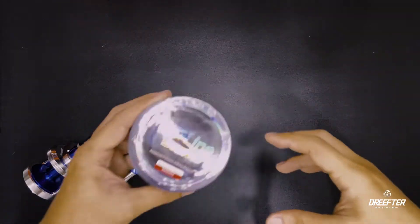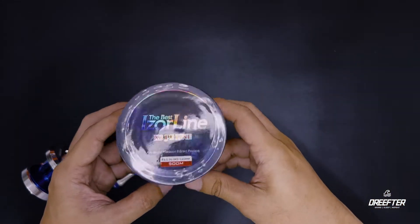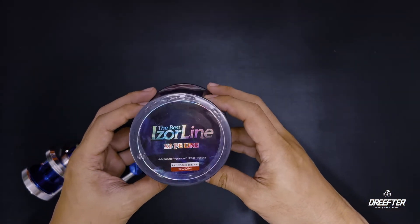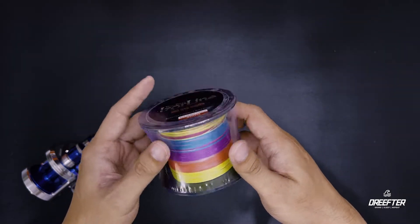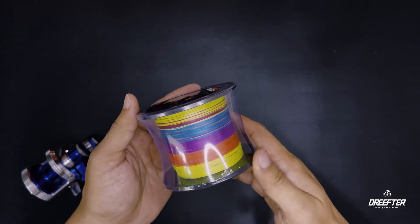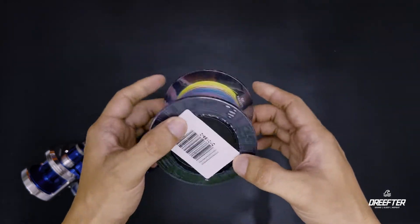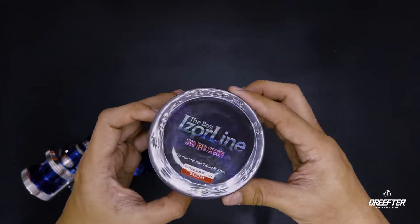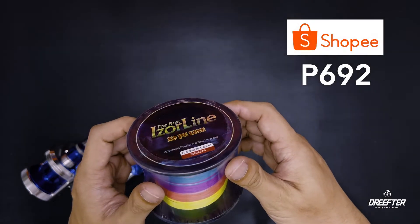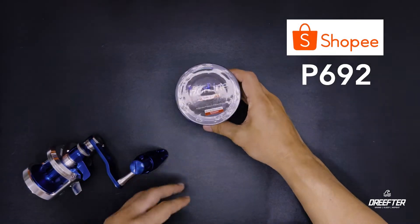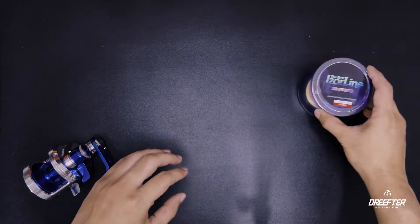So braid line naman, ang gagamitin natin ay Easer Line 45 pounds, 500 meters. Di ako sure kung mauubos natin yung all 500 meters, we'll see. Pero ito guys yung braid line, ito ay napaka mura, halagang 692, 45 pounds. Pasok na pasok sa budget.